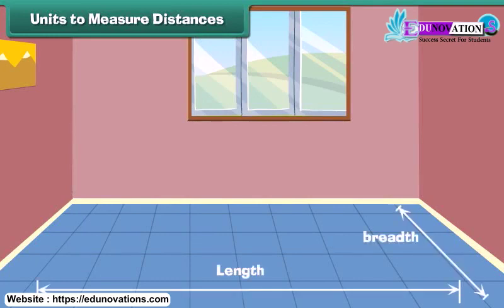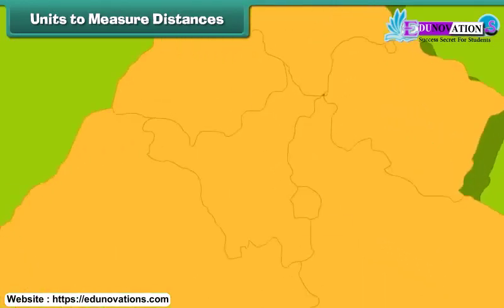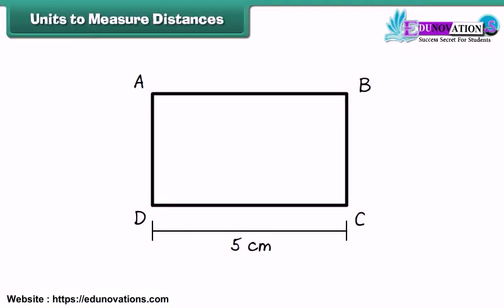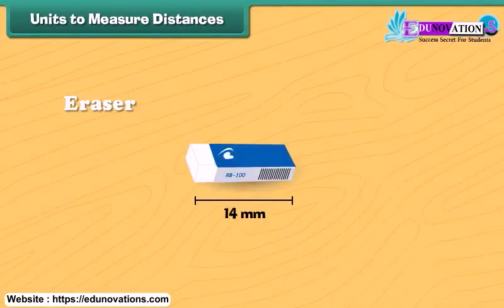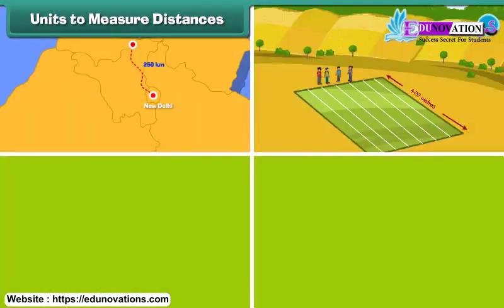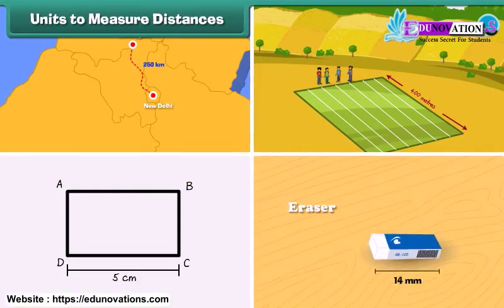Length, breadth, and height are the words used to express some distance. The distance between New Delhi and Chandigarh is 250 kilometers. Many students participated in a 400 meters race. The length of rectangle ABCD is 5 centimeters. The length of the eraser is 14 millimeters. We find that kilometer, meter, centimeter, and millimeter are the units used for measuring distances.